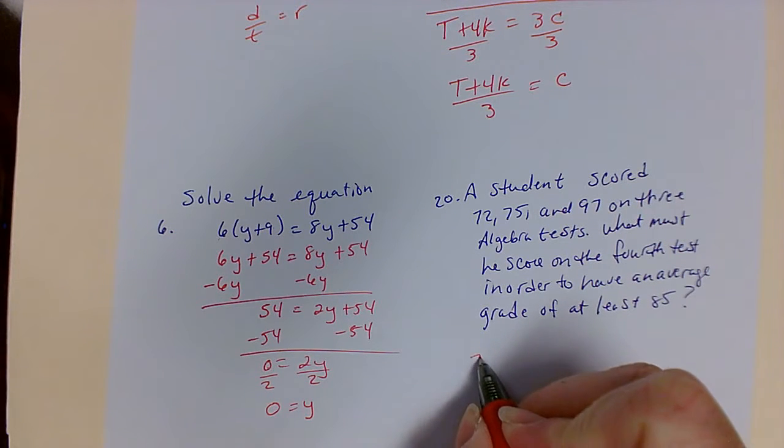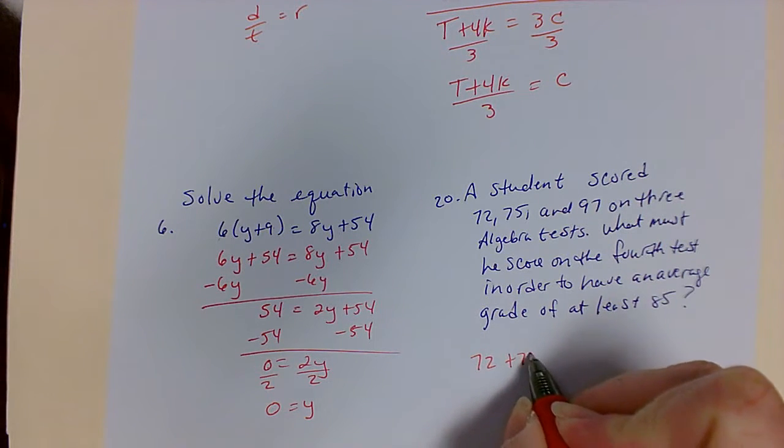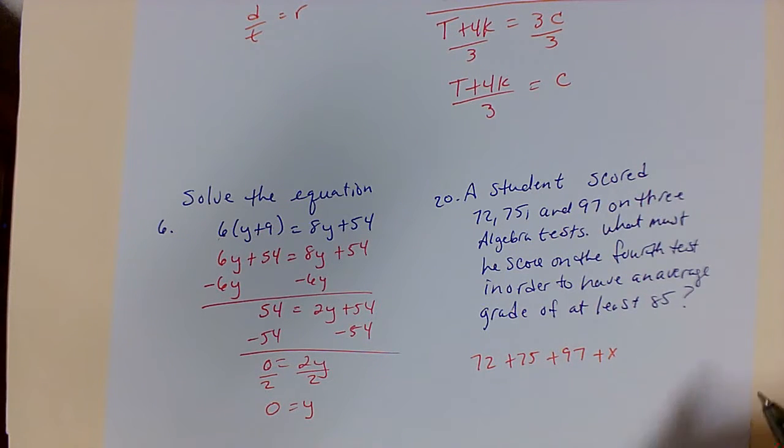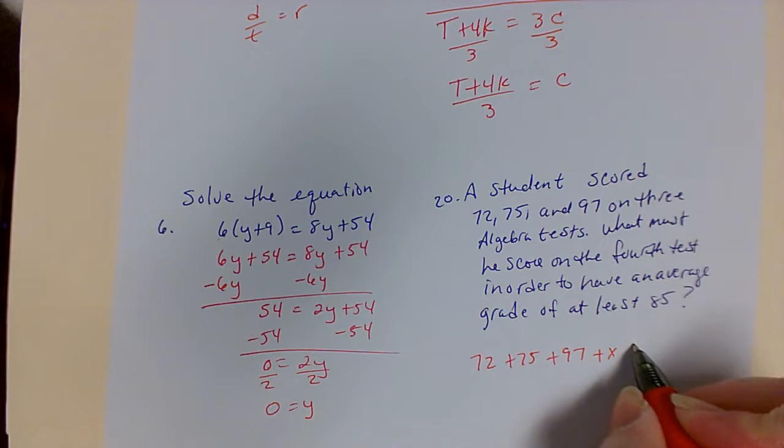What you want to do here is add up your test grades plus something for the 4th test grade. It needs to be at least 85, so that means greater than or equal to 85.